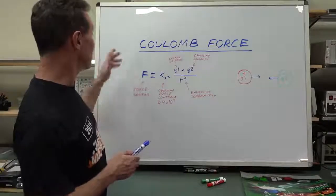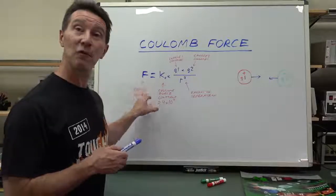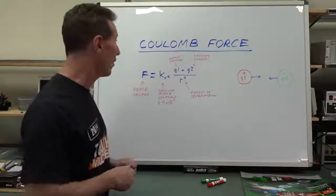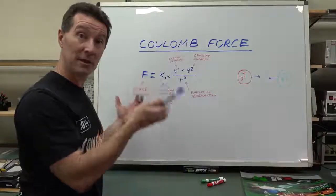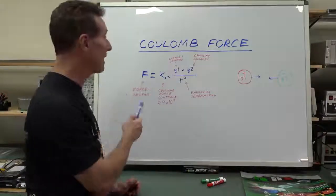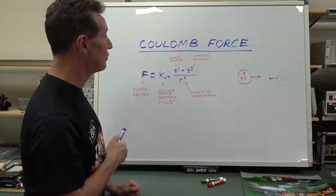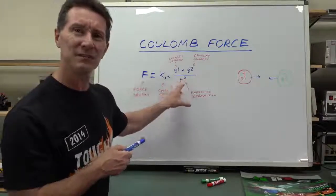But basically, Coulomb force equation is force in Newtons is equal to the Coulomb force constant, just this magic constant. It's roughly 9 times 10 to the 9, multiplied by the charge in Coulombs Q1 times the charge in Q2 over R squared here. And this is like a radius of separation.